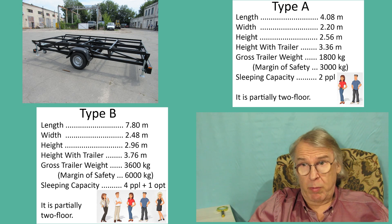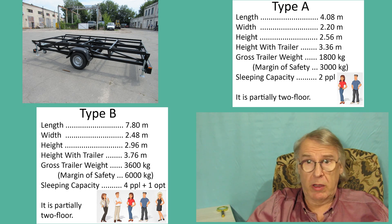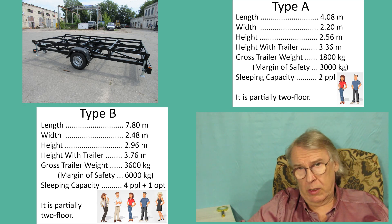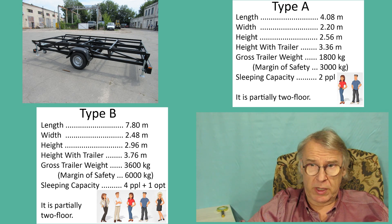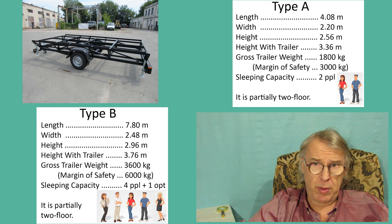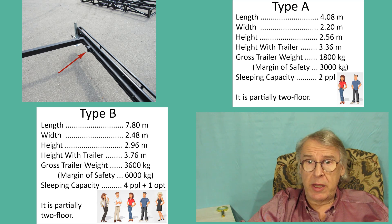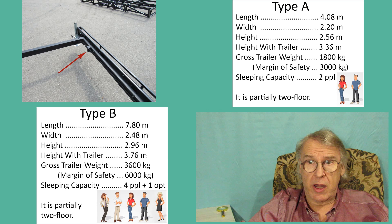The first motorhome type can provide very comfortable living conditions for two people for more than a month. The second motorhome type can provide super comfortable living conditions for two people for more than a month, and very comfortable living conditions for four or five people for more than a month. The electrical wiring for all types is made so that short-term immersion in water to a depth of one meter is possible without loss of electrical wiring functionality.